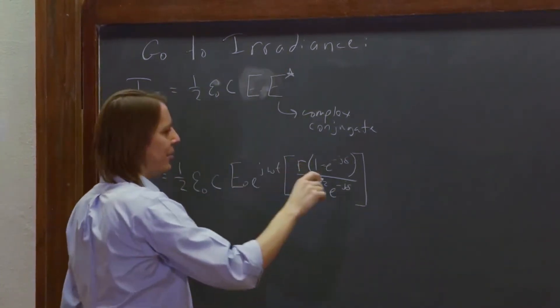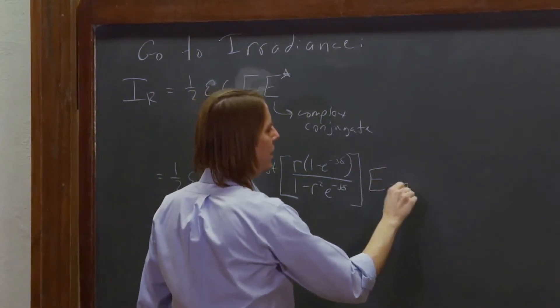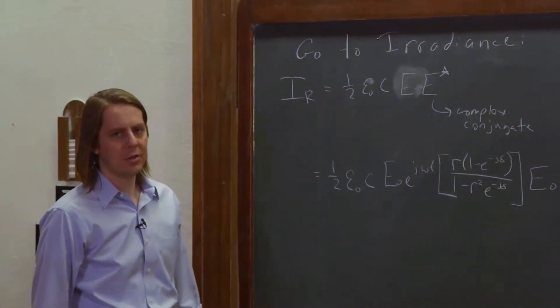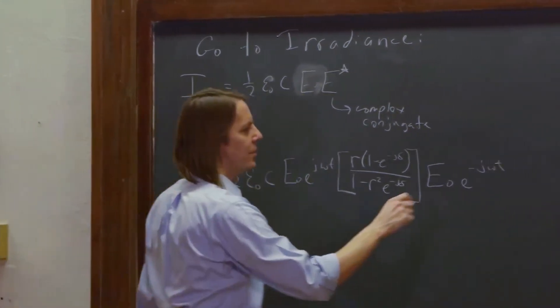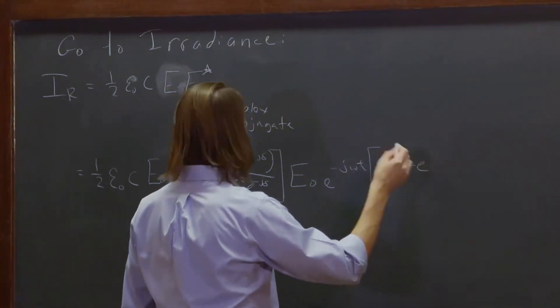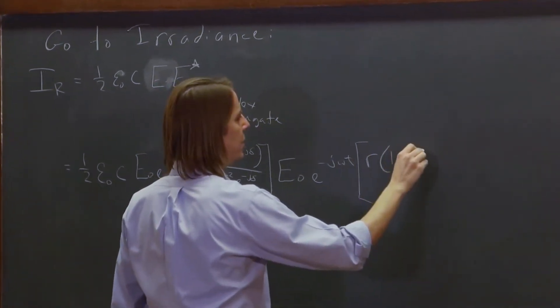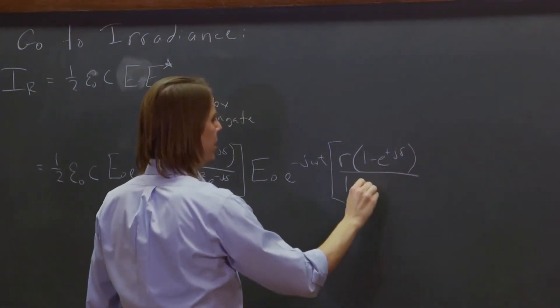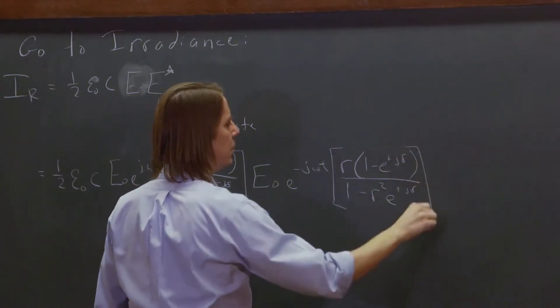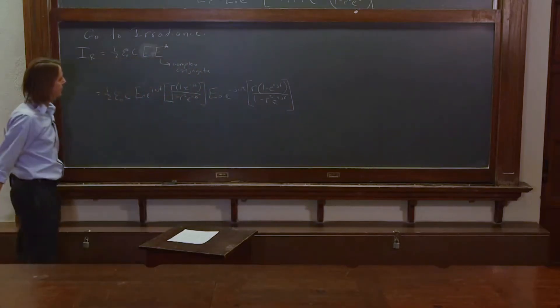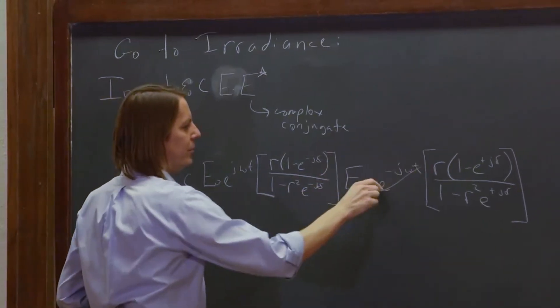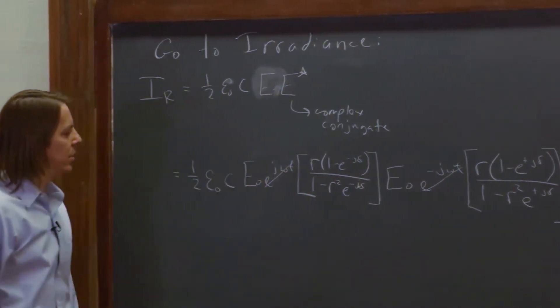So we have that, and then multiply it by the complex conjugate, also E naught E to the minus J omega T, right? Complex conjugate just means make all the square roots of negative 1 the opposite sign. So E to the minus J omega T times R(1 minus E to the plus J delta) over (1 minus R squared E to the plus J delta). All right, so now we multiply these. Well, it's going to help a little bit. You can see this one cancels that one.